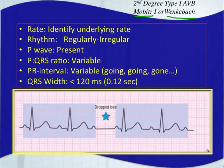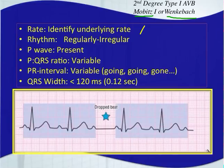You're going to identify the underlying rate. The rhythm should be regularly irregular — it's going to have some sort of pattern. These Wenckebach or Mobitz 1 type rhythms are typically transient; they don't last very long. They're either going to go away and your underlying rhythm is going to return, or they're going to progress into a worsened AV block.